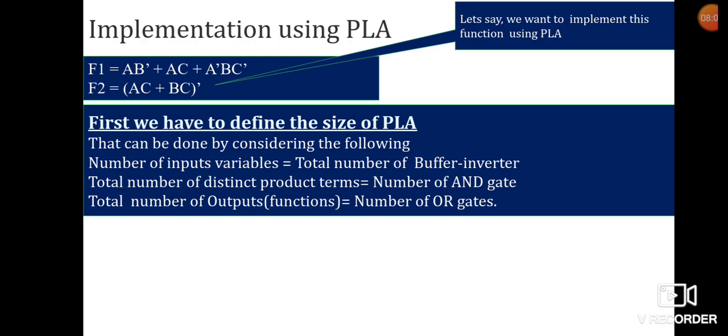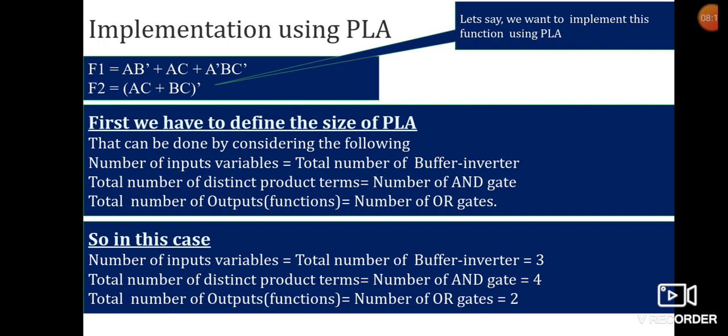The total number of outputs or functions defines the number of OR gates. With input variables A, B, C — three buffer-inverters; four distinct product terms — four AND gates; and two output functions — two OR gates.